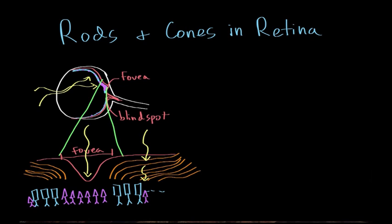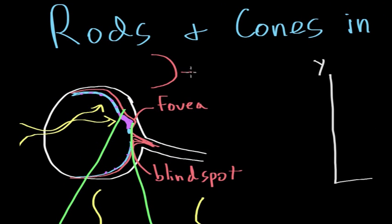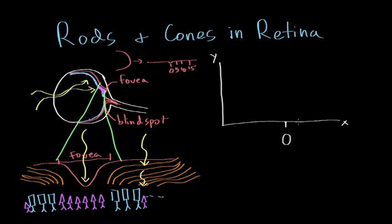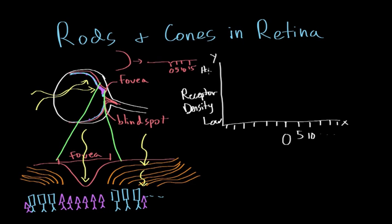Let's look at this same picture graphically. If I were to draw a graph, with the zero point on the x-axis representing where the fovea is — if we were to take the retina, which is curved in the eyeball, and flatten it out, there's a dimpled region known as the fovea, and we set this to zero. Moving away, this could be 5 degrees away from the fovea, 10 degrees, 15, and so on in both directions. On the y-axis, we have receptor density — the number of receptors found in the retina — from low to high.